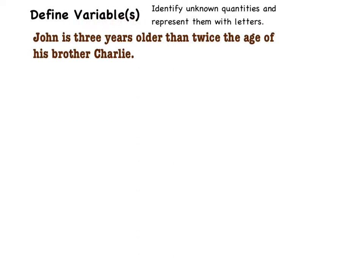Look at this sentence: John is three years older than twice the age of his brother Charlie. Some numbers are suggested but none are given.